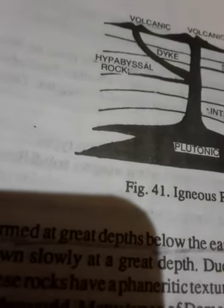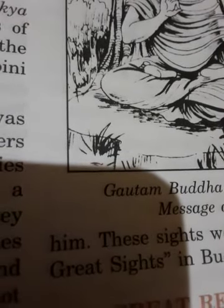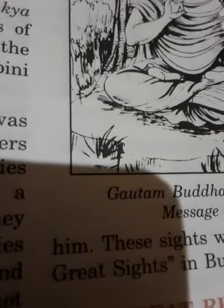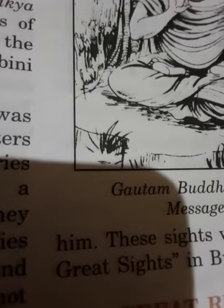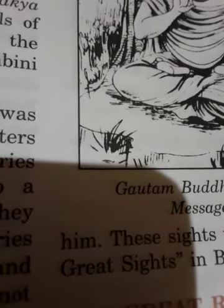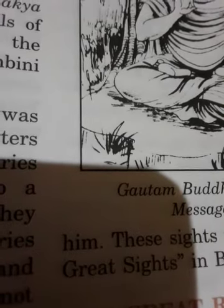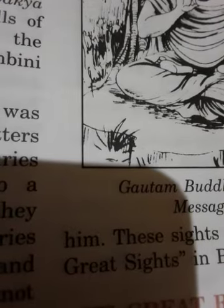Now let me touch on history class — Jainism and Buddhism. Today's topic is contribution of Jainism to Indian culture. Number 1 — growth of vernacular language. Jain literature was mostly written in Prakrit. Mahavira preached in Ardhamagadhi as it was easy for the people to understand. And later, these teachings were compiled into 12 books called Angas.